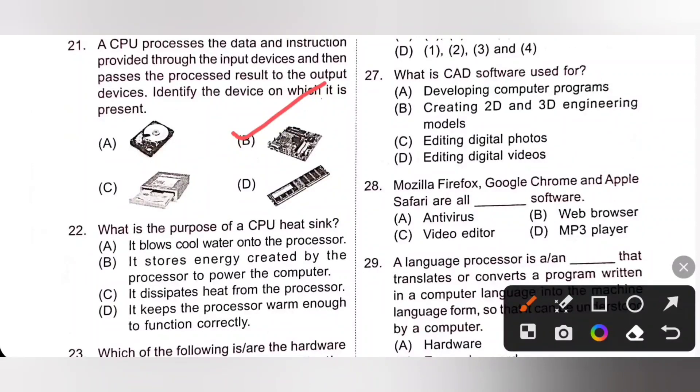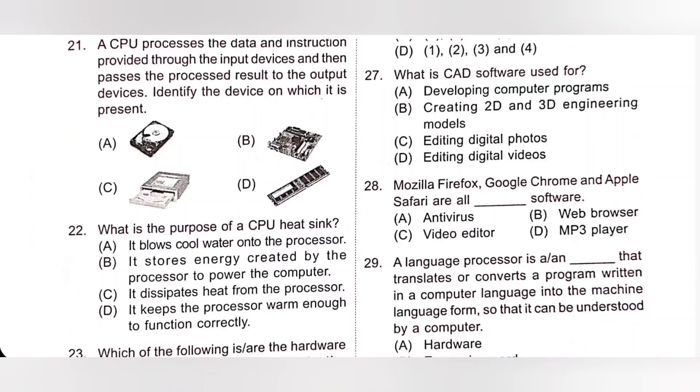Question 22. What is the purpose of a CPU heatsink? The purpose of a CPU heatsink is to dissipate heat from the processor. Option C is the correct answer.